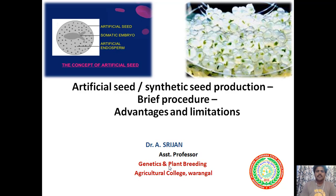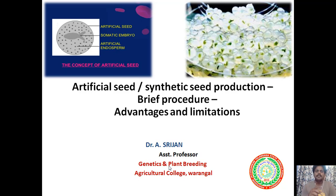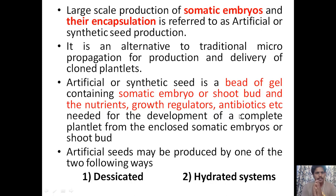Good morning everyone. Today I'm going to speak about artificial seeds or synthetic seed production — the brief procedures involved, advantages, and limitations. An artificial seed is a somatic embryo surrounded by an artificial endosperm and covered with an encapsulating material. The large-scale production of somatic embryos and their encapsulation is referred to as artificial seed or synthetic seed production.